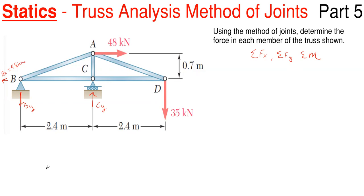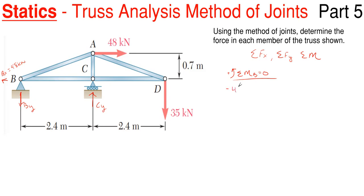However, I do have to sum moments in order to find B sub Y or C sub Y. So let's sum moments about B in order to get C sub Y. I'm going to have the 48 kilonewtons, C sub Y, and the 35 kilonewtons causing moments about B. Starting with the 48 kilonewtons.